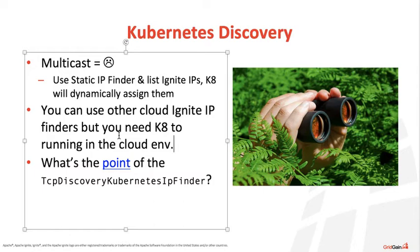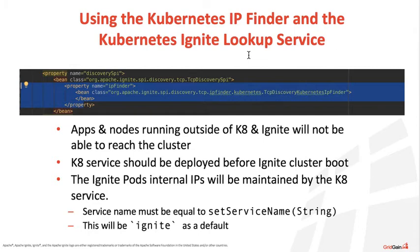You can also use other cloud-based IP finders as well, but you have to make sure you're telling Kubernetes that you're doing that in the cloud environment. Ignite does provide other cloud-based IP finders covered in our documentation, but just make sure you're making those two things align appropriately between the two environments.